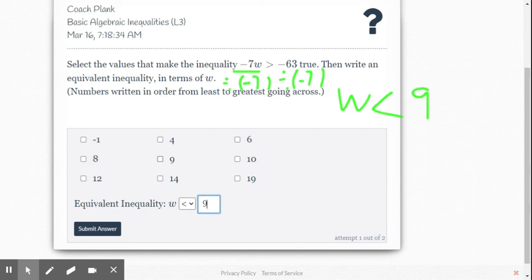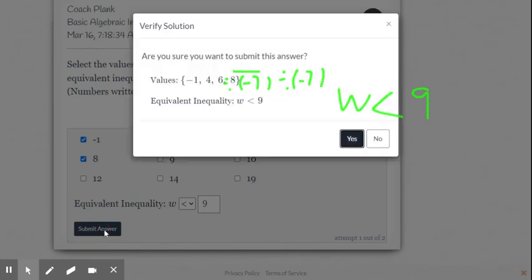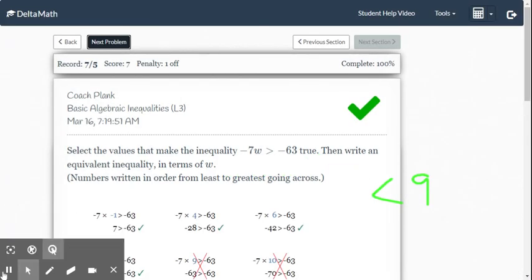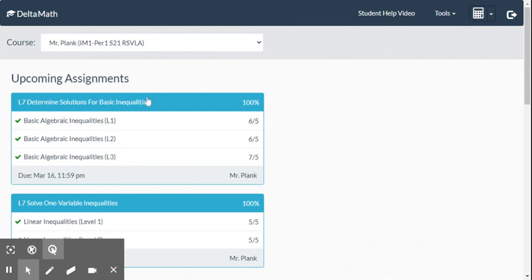So what numbers would work? How about 8, is 8 less than 9? Yep. 6, 6 is less than 9. 4 is less than 9, and negative 1 is less than 9. Submit our answer, yeah we're good and we got it. I hope that helped determine solutions for basic inequalities in Delta Math.